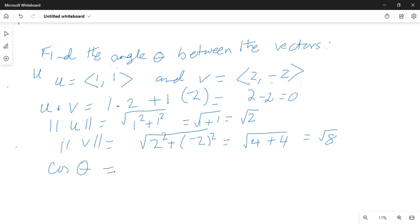theta being the angle between the two vectors is equal to u dot v divided by absolute value or magnitude of u multiplied by magnitude of v, which is equal to 0 divided by square root of 2 multiplied by square root of 8 is equal to 0.